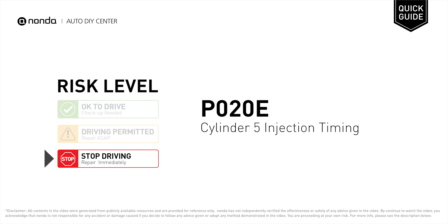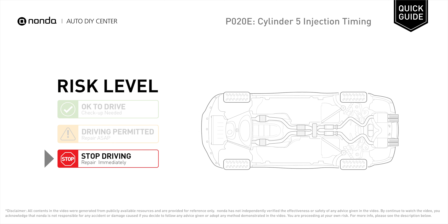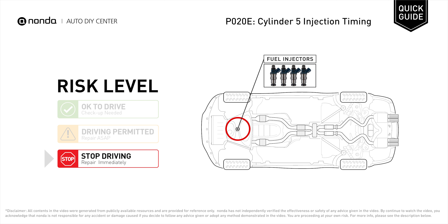P02OE is a diagnostic trouble code for Cylinder 5 Injection Timing. Under this circumstance, stop driving and repair your vehicle immediately. It means the ECM has detected an unintended fuel injection has occurred at Cylinder 5.